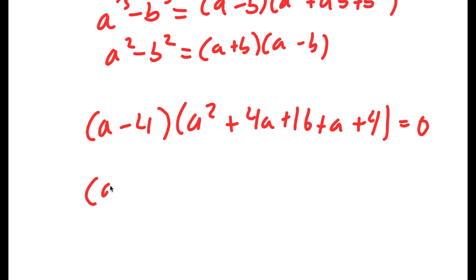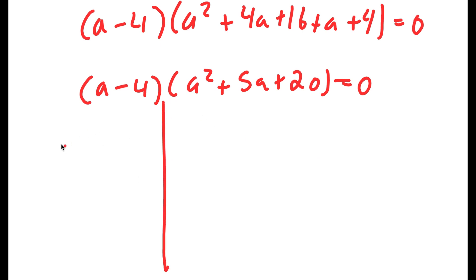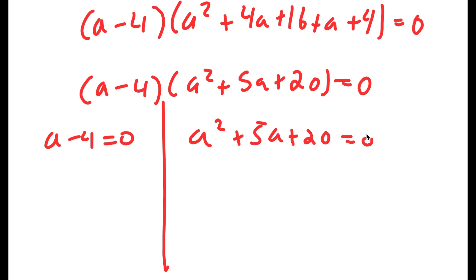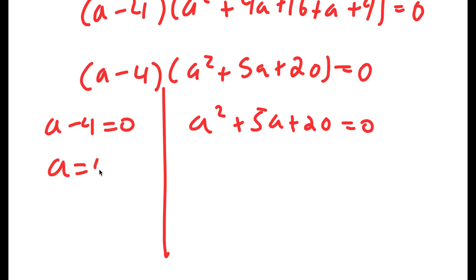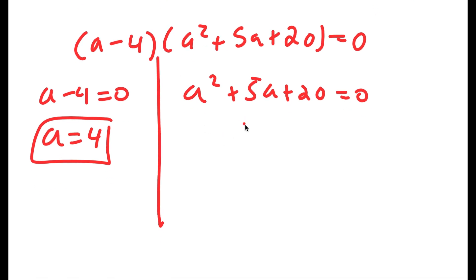This simplifies to a minus 4 times a squared plus 5a plus 20 equals 0. This gives me two equations: a minus 4 equals 0, so a equals 4, and a squared plus 5a plus 20 equals 0. I'm going to use the quadratic formula for the second equation.